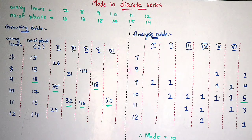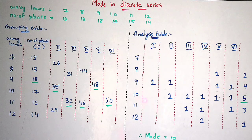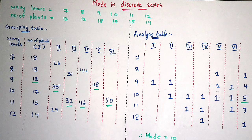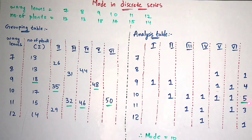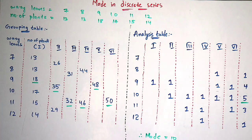These are the analysis numbers formed from the grouping table. At the 8th number there is only 1 analysis, at the 9th there are 4, at the 10th there are 5, at the 11th there are 3, and at the 12th there is 1. The largest number is 5. The waxy leaf value corresponding to this analysis number 5 is 10. So here 10 will be the answer in this discrete series - mode equals 10. You must write the result compulsory, and the result depends upon the question. In this way the analysis table is formed, and this is about mode in discrete series. In the next video, let us discuss about mode in continuous series.